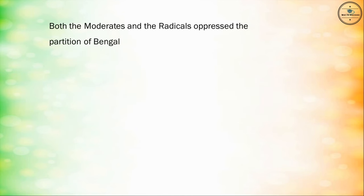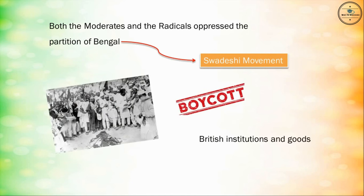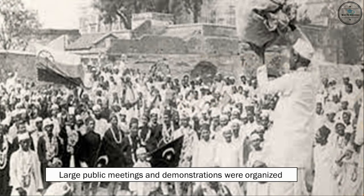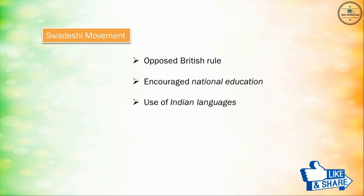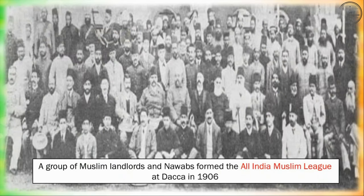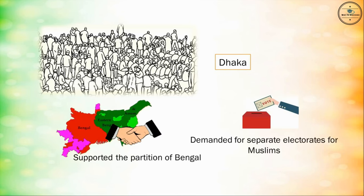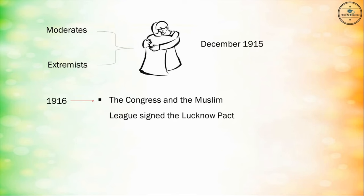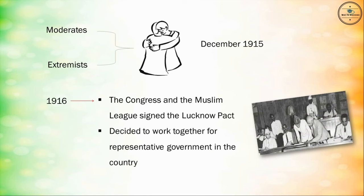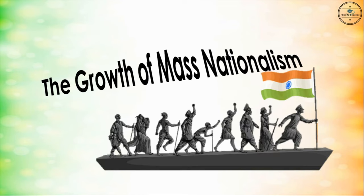Both the moderates and the radicals opposed the partition of Bengal. This led to the birth of the Swadeshi movement, which boycotted British institutions and goods. Large public meetings and demonstrations were organized. The Swadeshi movement opposed British rule, encouraged national education, and promoted the use of Indian languages. A group of Muslim landlords and Nawabs formed the All-India Muslim League at Dhaka in 1906. A mass meeting of Muslims held at Dhaka supported the partition of Bengal and demanded separate electorates for Muslims. Moderates and extremists reunited in December 1915. In 1916, the Congress and the Muslim League signed the Lucknow Pact and decided to work together for representative government in the country.